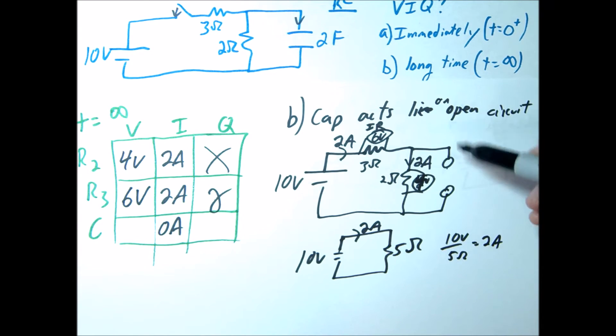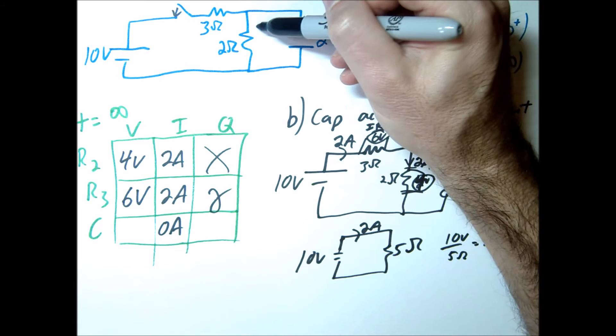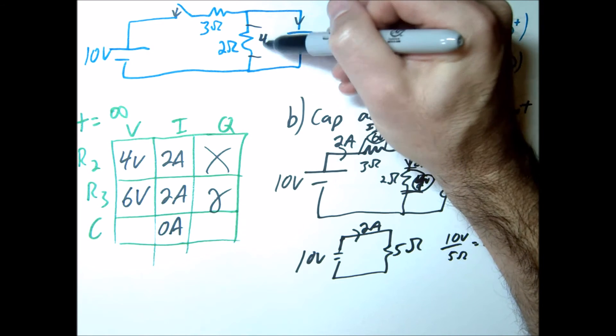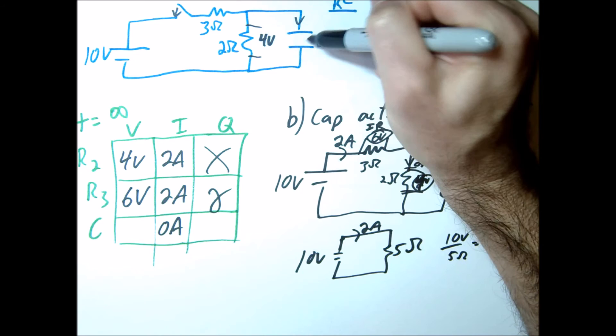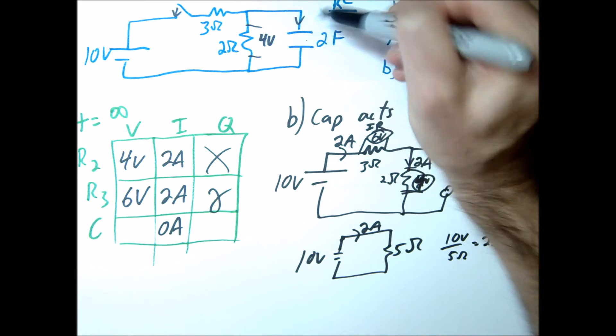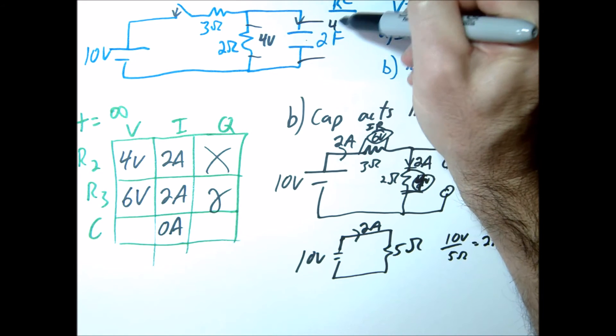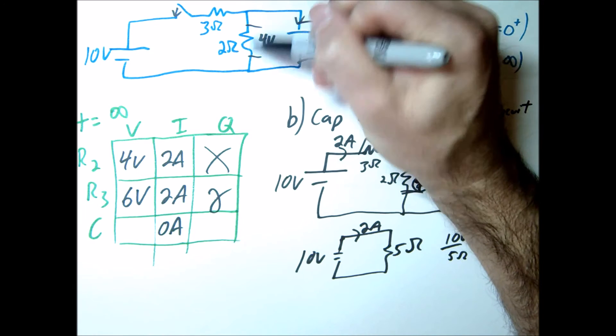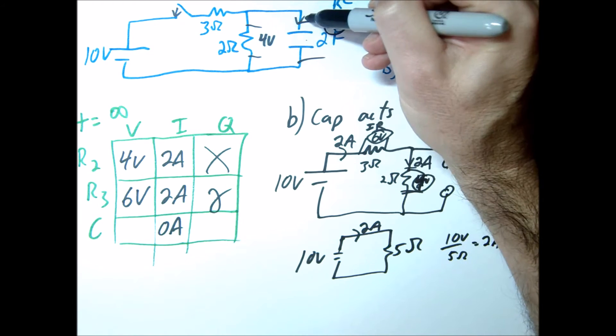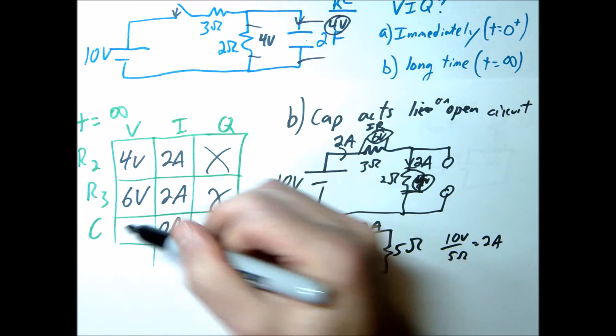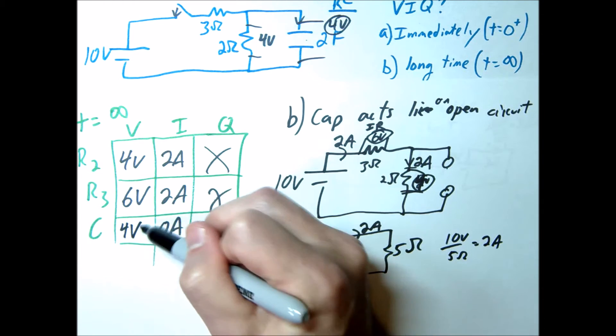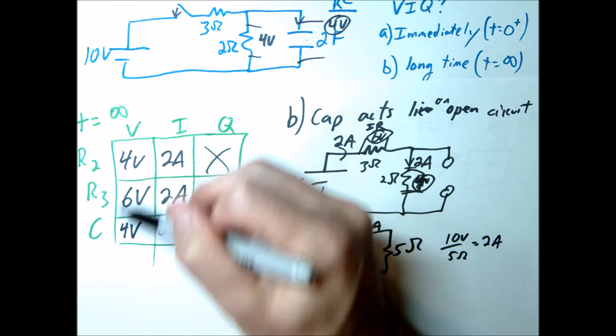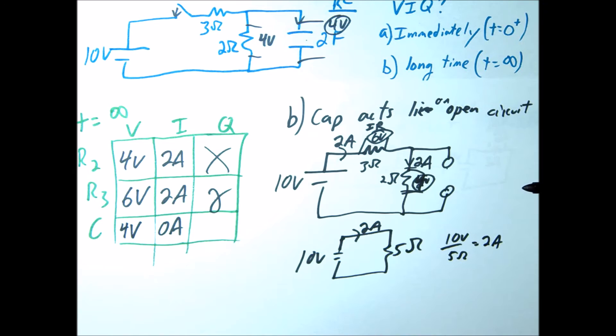So for the capacitor here, I do want you to notice this is 4 volts. But notice these two are in parallel with each other. So if this is 4 volts across here, this must also be 4 volts. So the voltage drop here to here is 4 volts. Therefore, the voltage drop is also 4 volts. So this will take on the same voltage drop as the resistor that it's in parallel with.